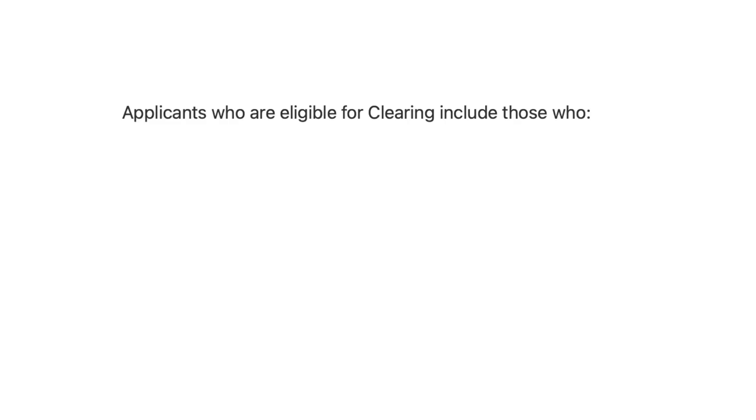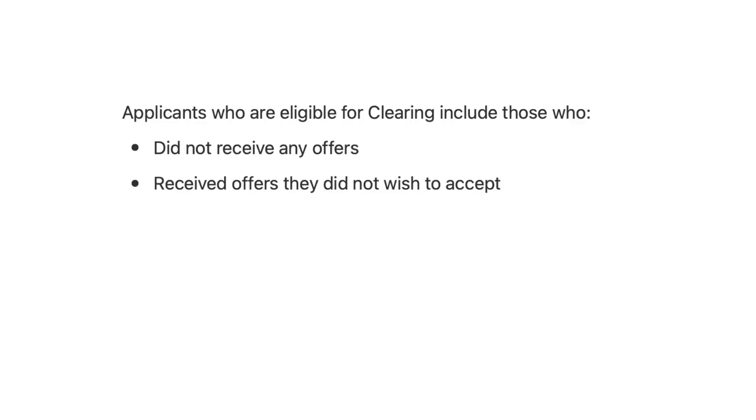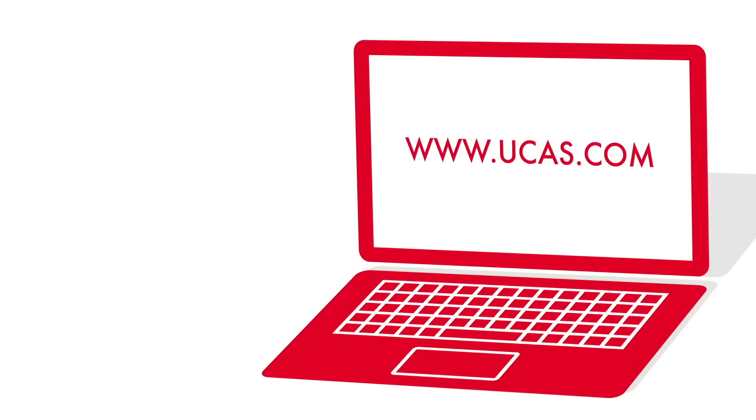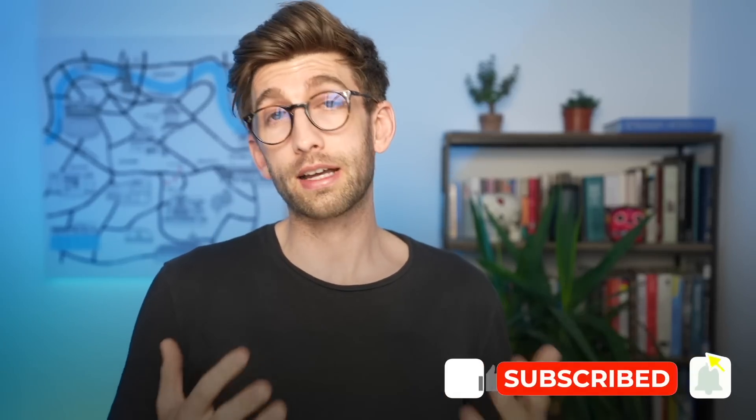Applicants eligible for clearing are those who did not receive any offers, received offers they didn't want to accept, did not meet the conditions of offers received, have paid the multiple-choice application fee of £26.50, or have declined their firm place. I have a video with a useful cheat sheet listing all universities and where to call to try to get a clearing place. To maximise your chances across all these routes, focus on those five key elements of the application and put all your effort into nailing them to stand out from the crowd — it's getting more competitive than ever.